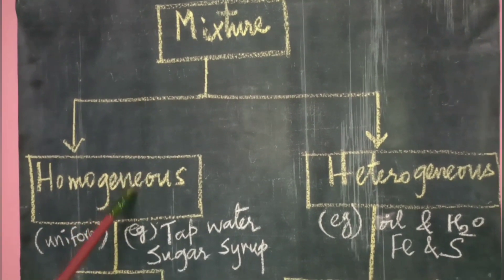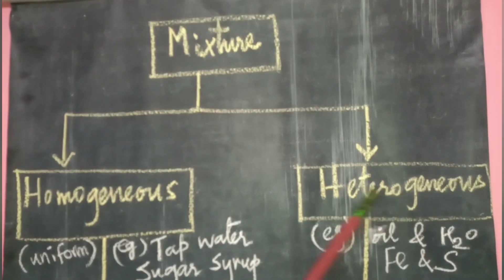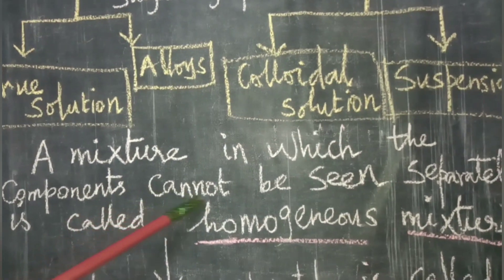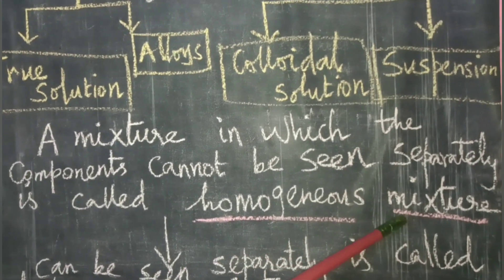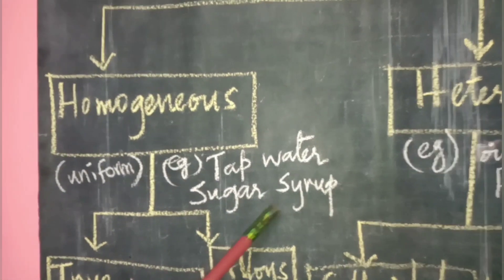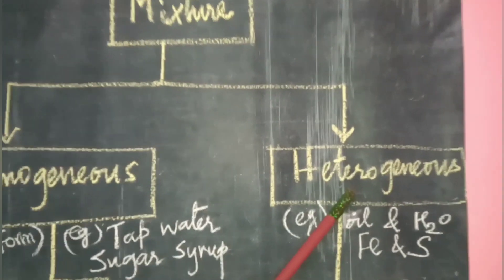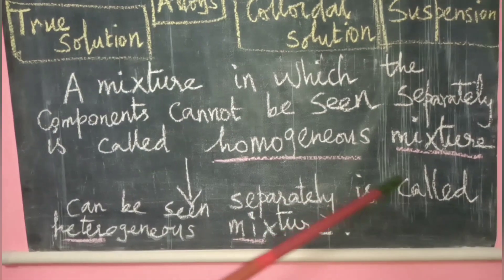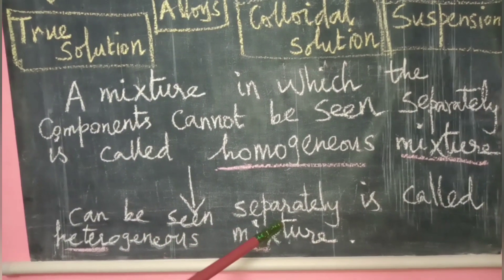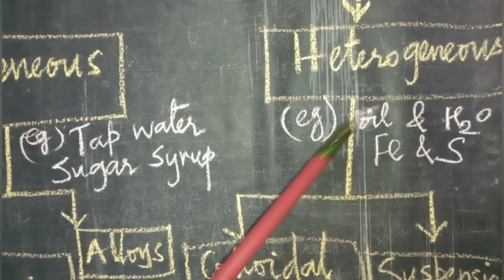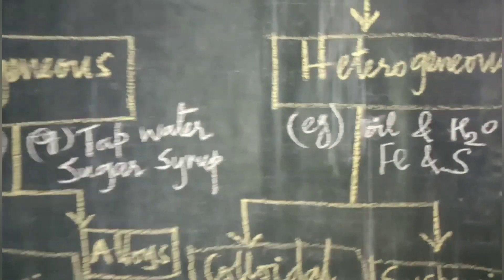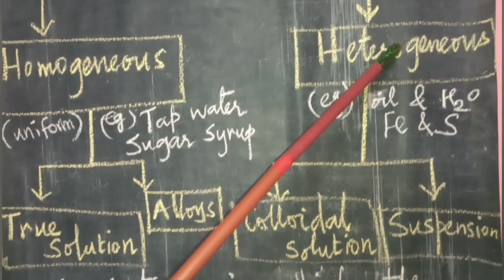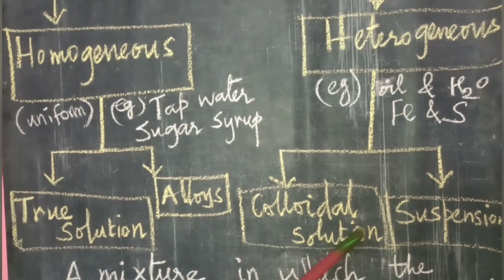Mixtures can be classified into two types: homogeneous mixture and heterogeneous mixture. A homogeneous mixture is one in which the components cannot be seen separately — for example, tap water or sugar solution. A heterogeneous mixture is one in which the components can be seen separately — for example, oil and water, or iron and sulfur powder. Homogeneous mixtures are further classified into true solutions and alloys, while heterogeneous mixtures are classified into colloidal solutions and suspensions.